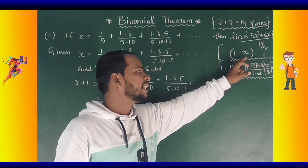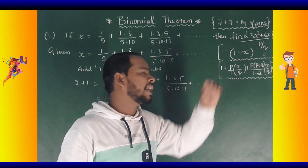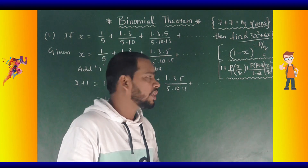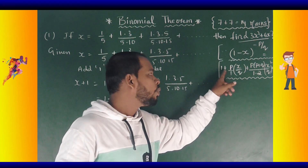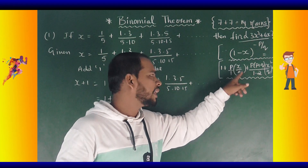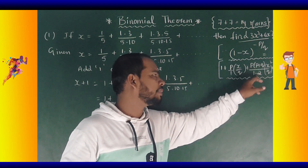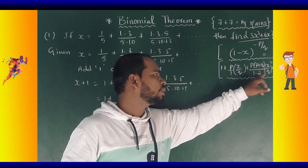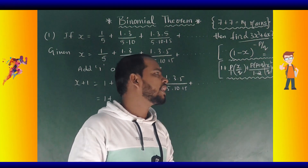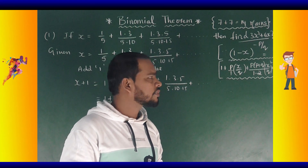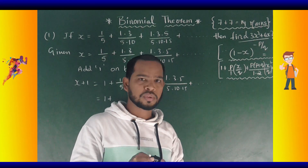The formula is: 1 minus x whole power minus b by q equals 1 plus b by 1 times x by q plus b into b plus q by 1 into 2 times x by q whole square plus up to so on.